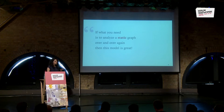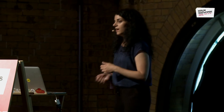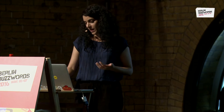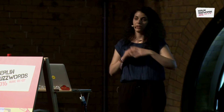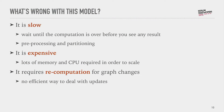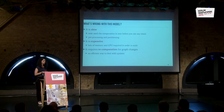But if you want to do something more interesting, like see how page rank changes when your graph changes, or how your graph might be disconnected if a user deletes their account, then with this model we have today, we have to redo the whole computation. So what we have today is slow — you have to wait for the whole processing to finish before you can see any result. It's expensive because you have to do partitioning and replication to minimize communication between machines.